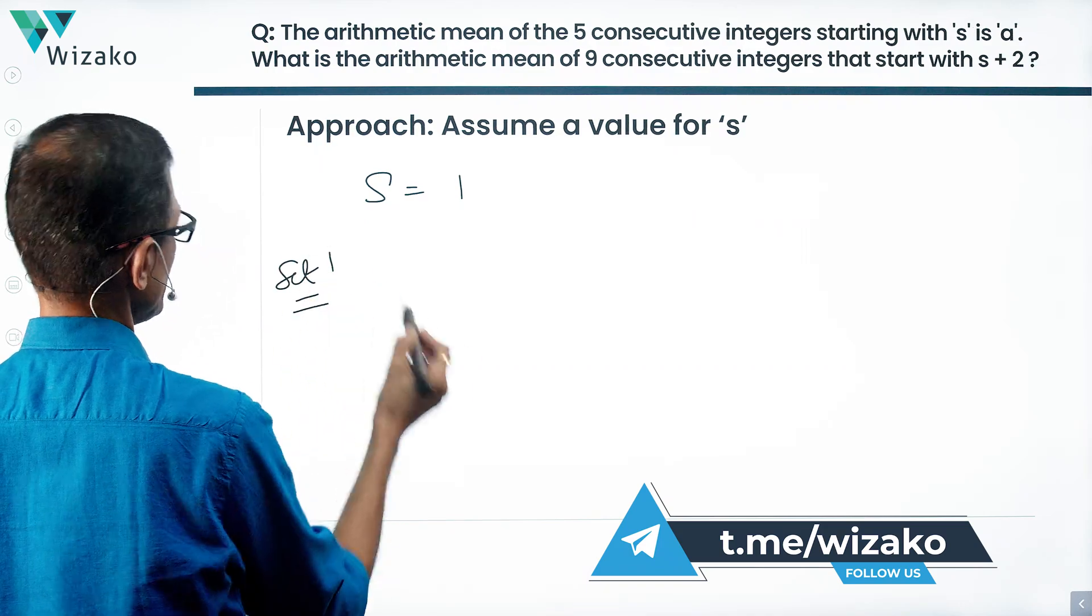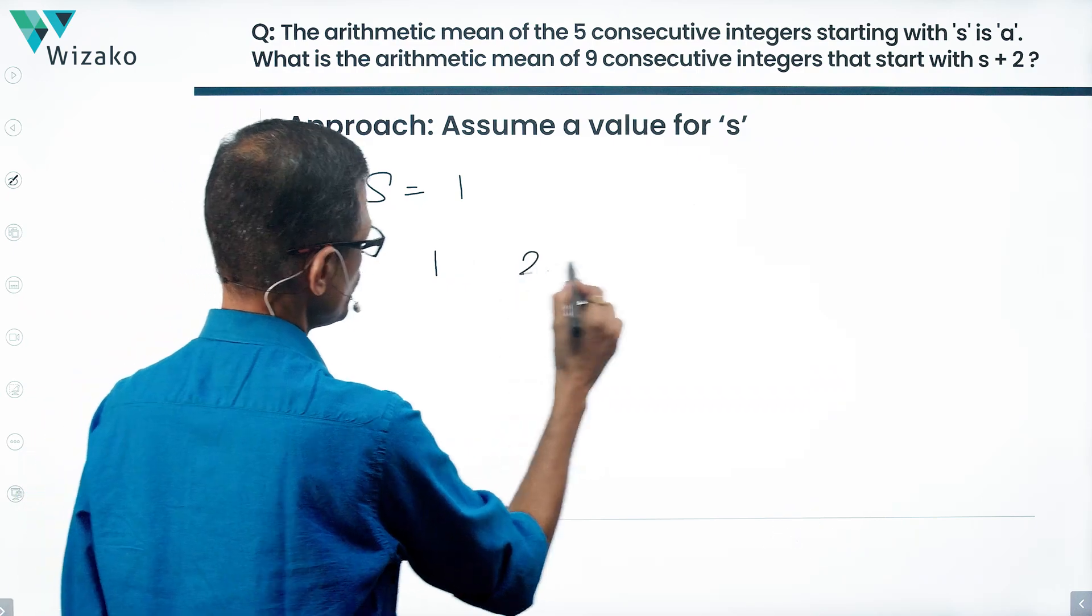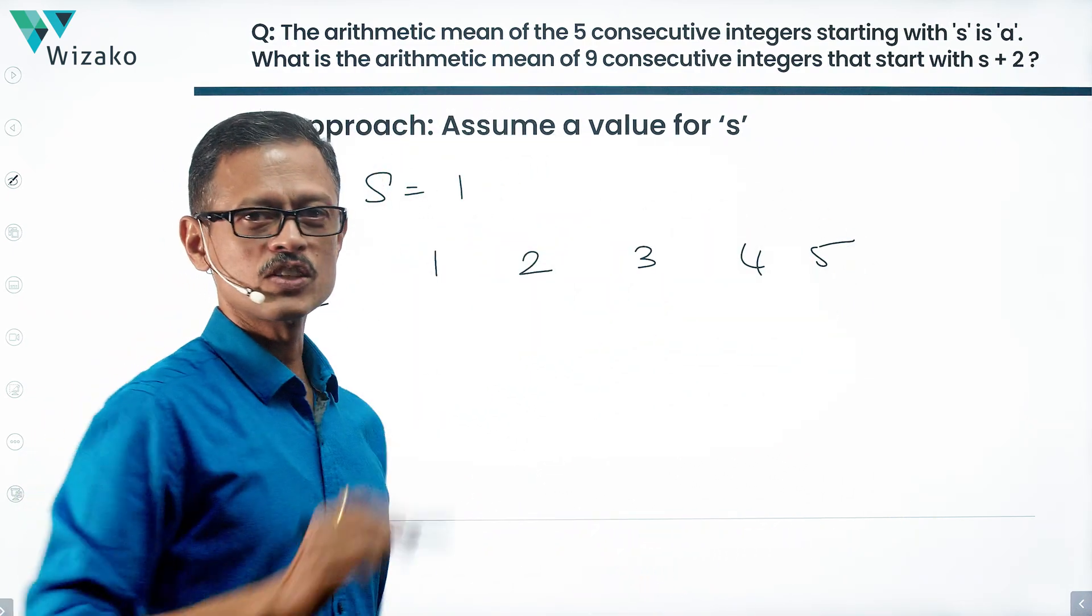So set 1, what do we have? 5 consecutive positive integers starting with 1: 1, 2, 3, 4, 5. What's the average of these 5 numbers?